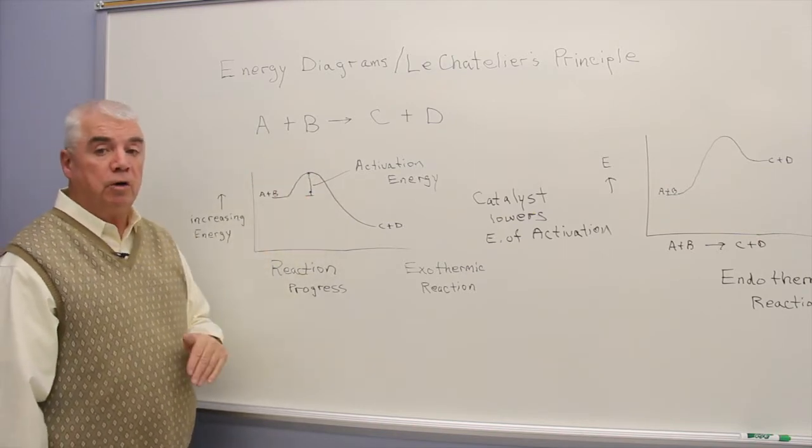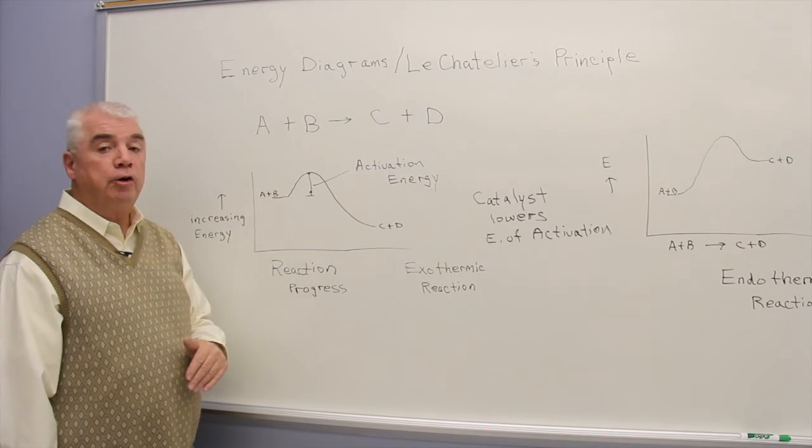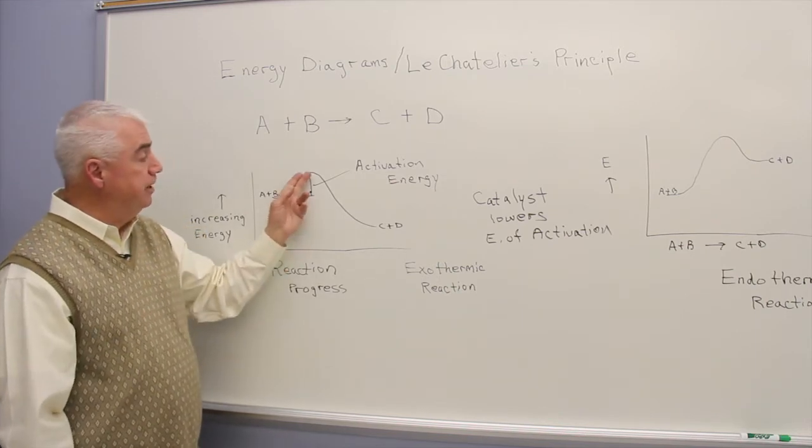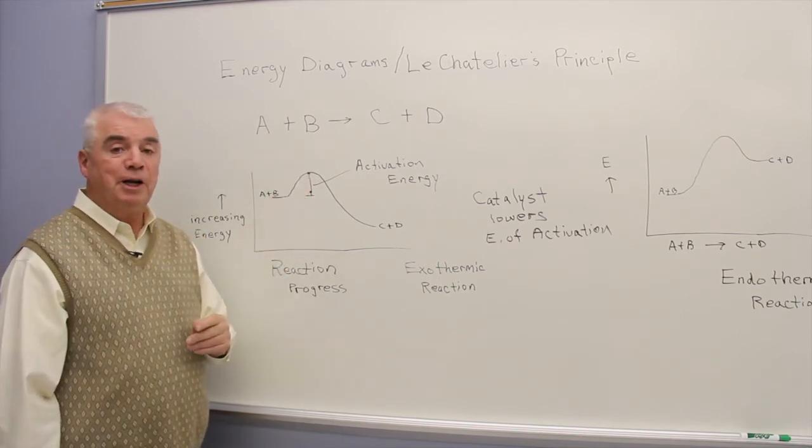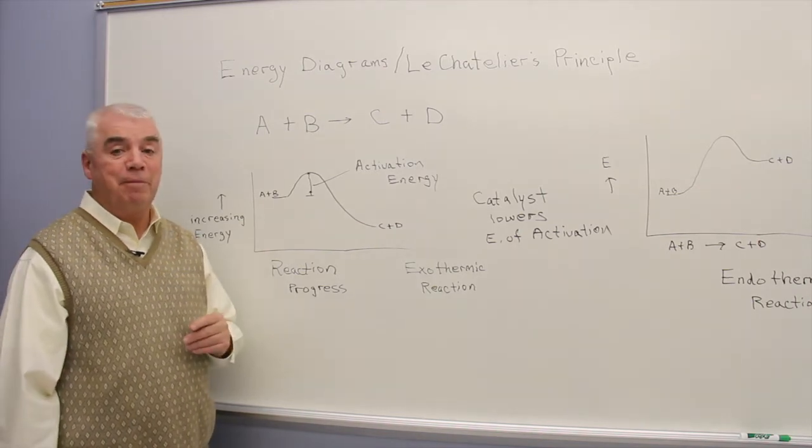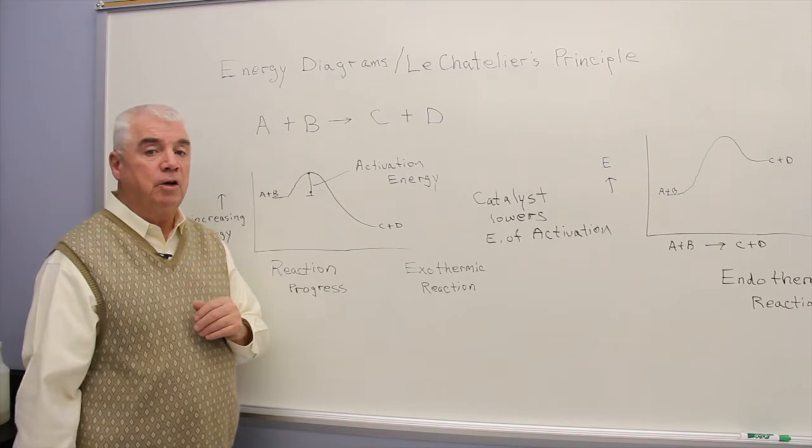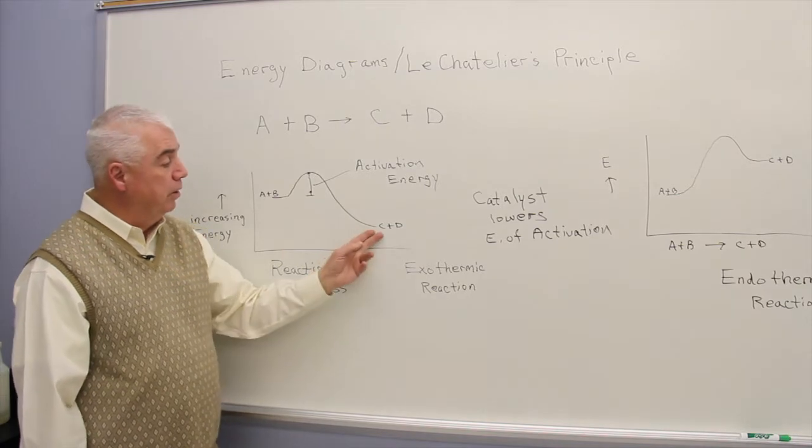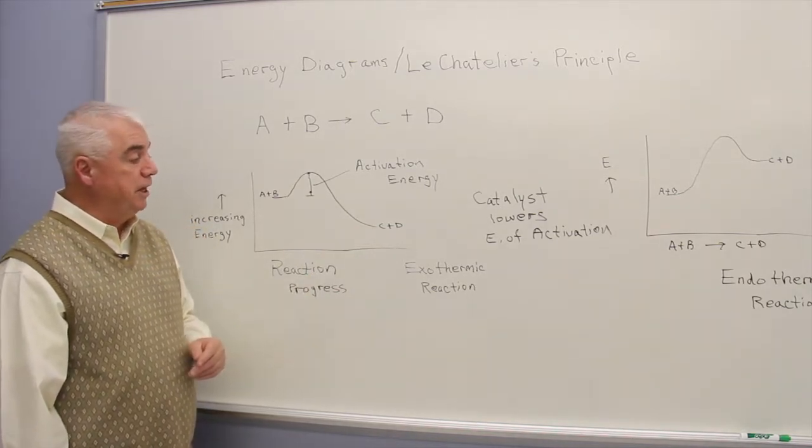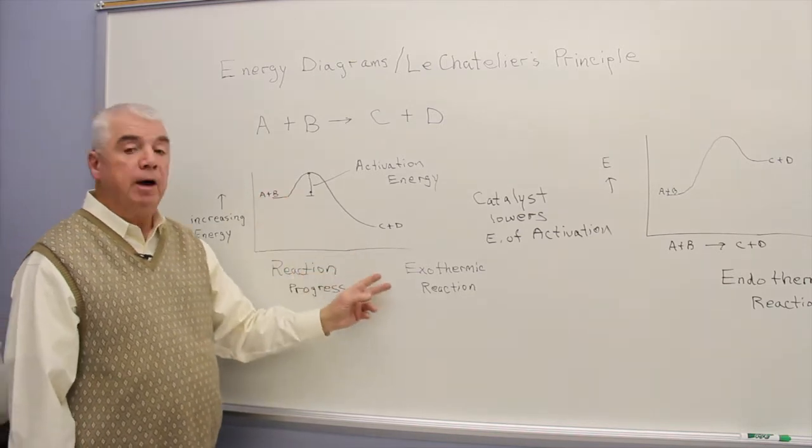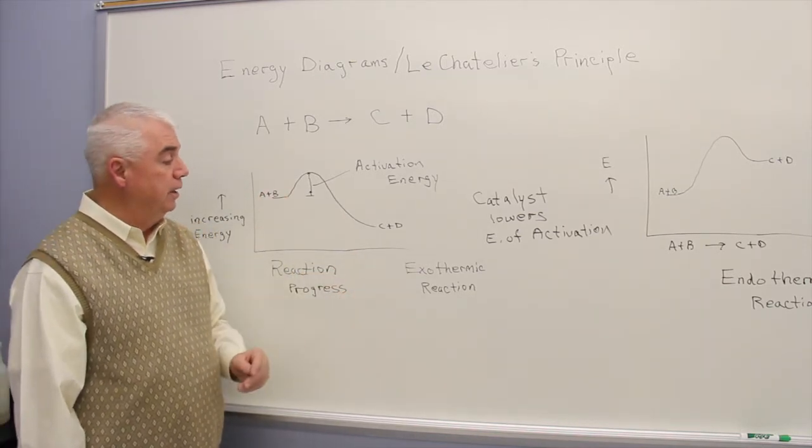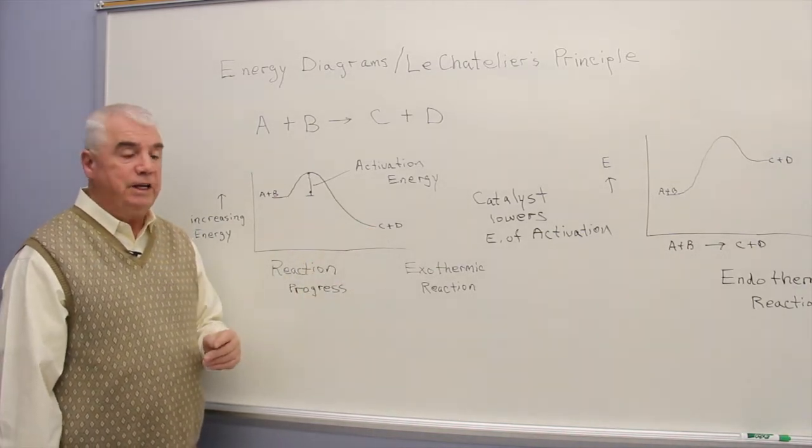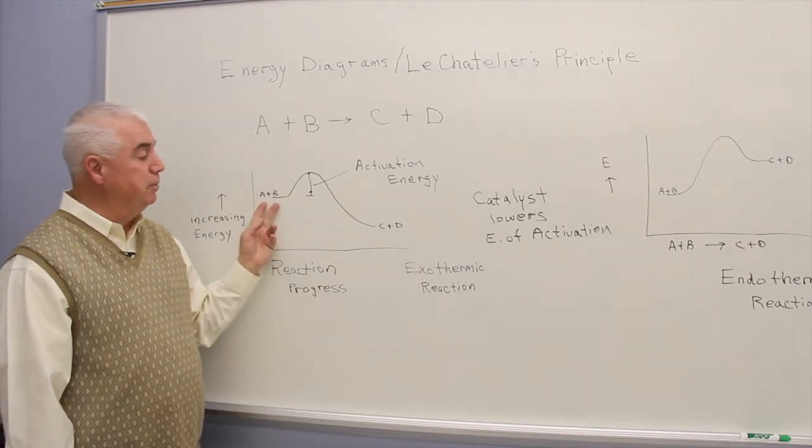So A plus B, the starting materials here on the left, C plus D as we move to the right. The curve represents all the intermediates that might be involved as A and B collide to form C plus D. As A and B slide over to C and D, there's a hurdle here, an energy barrier called the energy of activation. This particular diagram represents an exothermic reaction. Energy is given off because the products, C and D, don't contain as much energy as the starting materials.